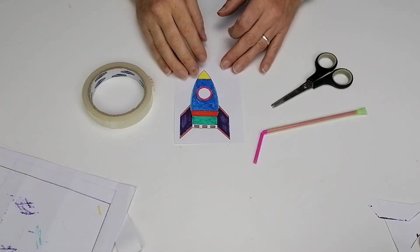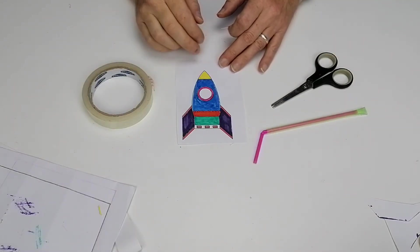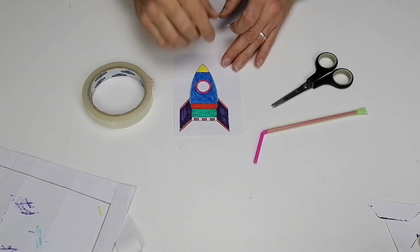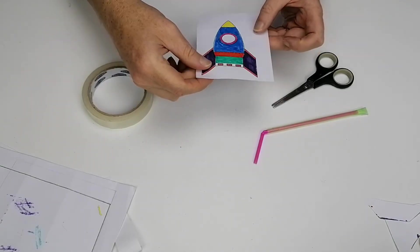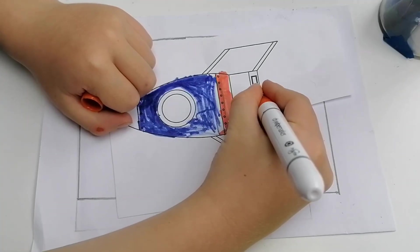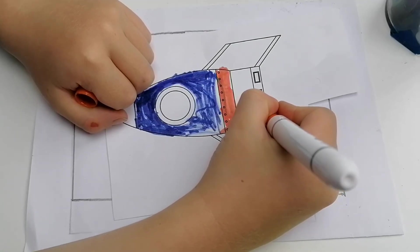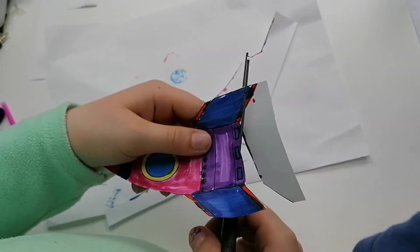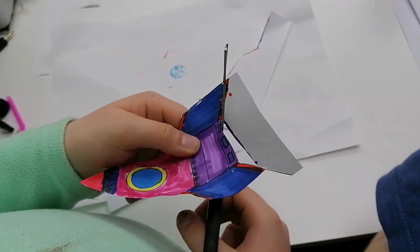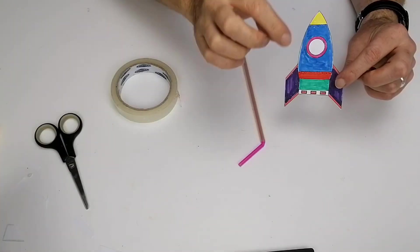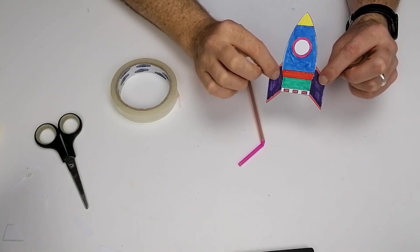Thank you. To make the rocket from the template design, I take the template and I've colored up one here, and then you're just going to simply cut it out. So this is my one that I've colored up and cut out.